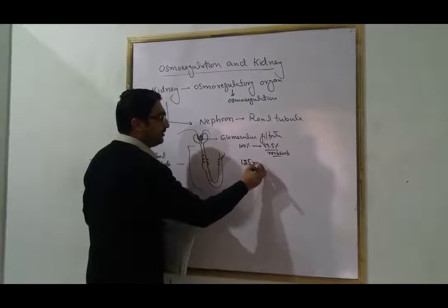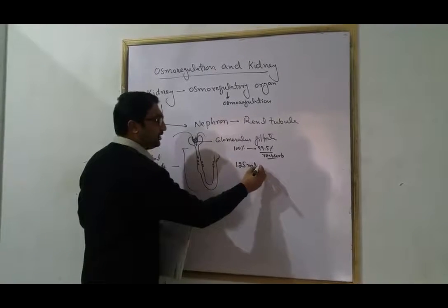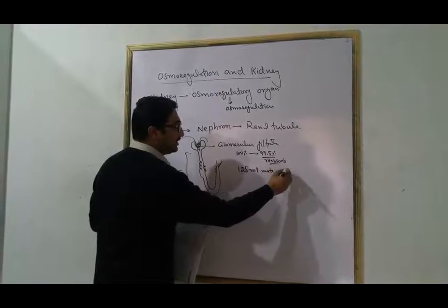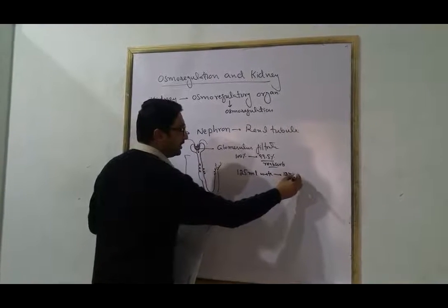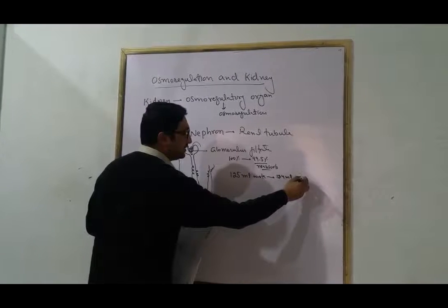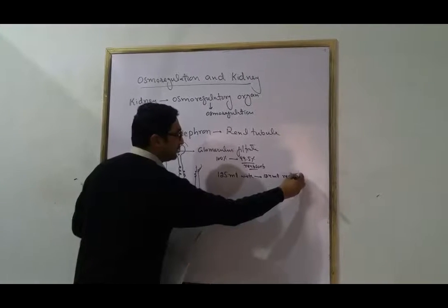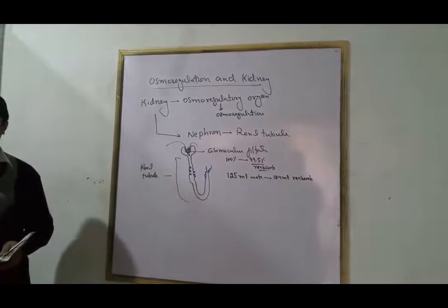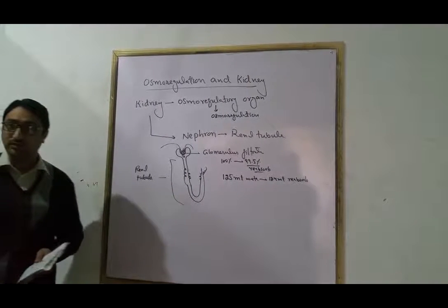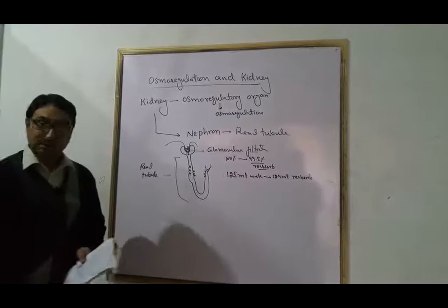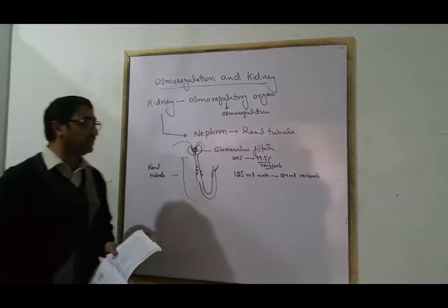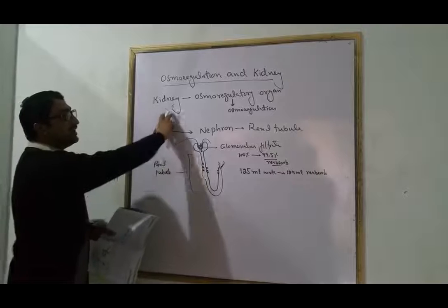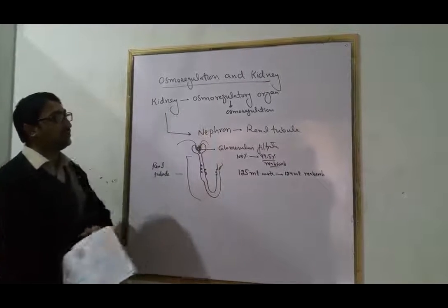So to summarize: the kidney is the osmoregulatory organ. Osmoregulation involves the Glomerulus filtering the blood, and the body deciding what waste material to remove and what to retain.